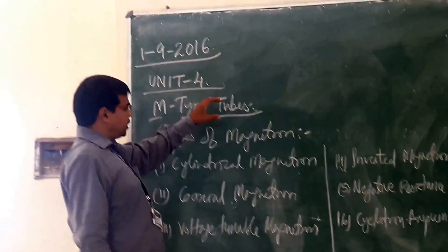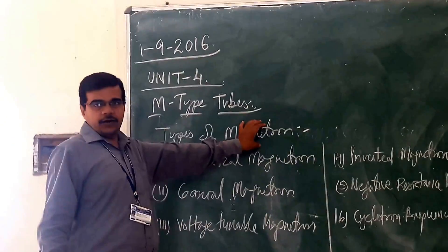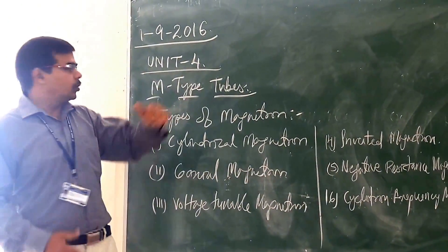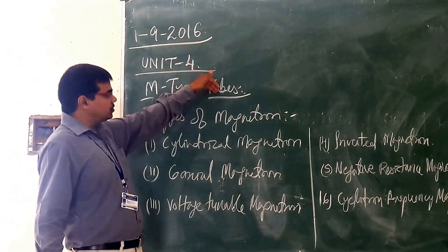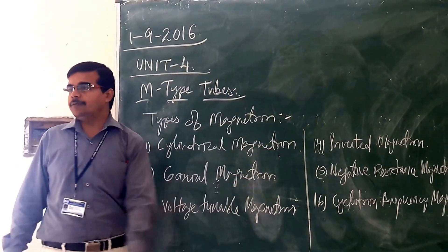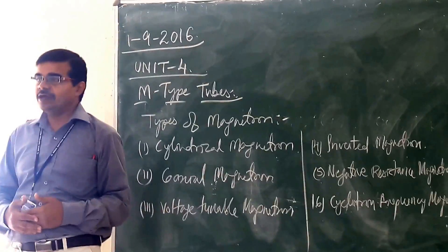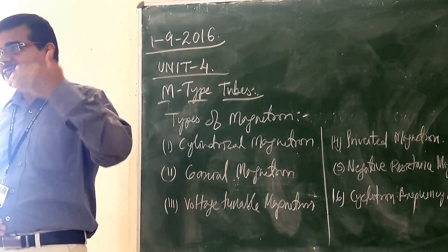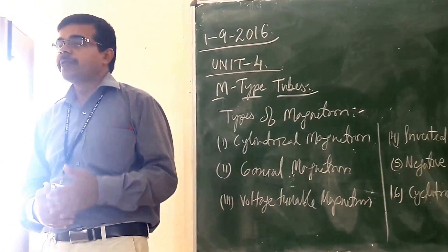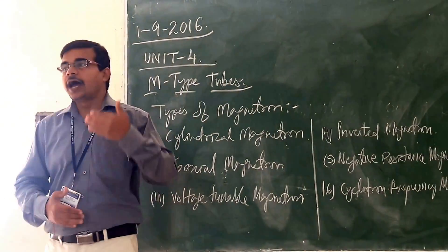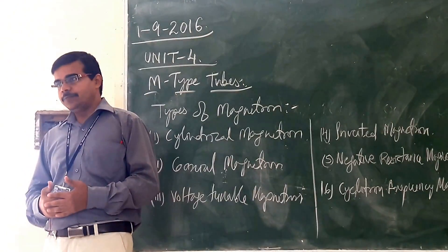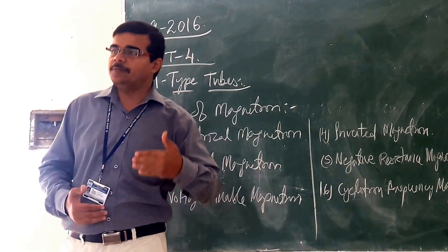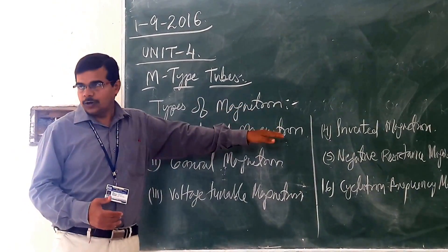In M-type tubes, you are having a resonant type. In resonant type, you are having a slotted-anode type, and in slotted-anode type, you are having a re-entrant type. In re-entrant type, you are having the magnetron.